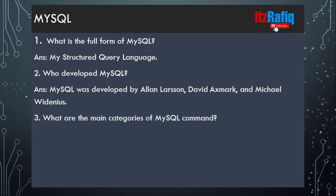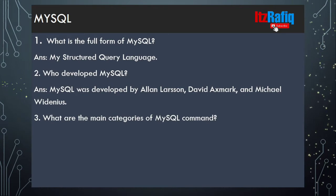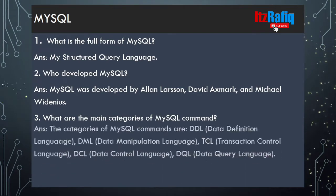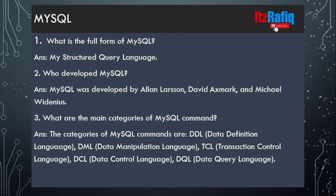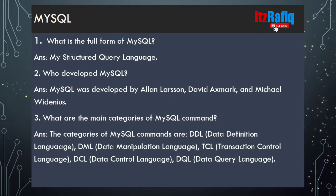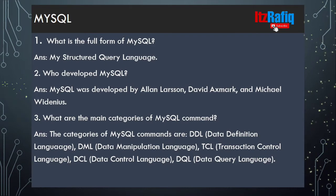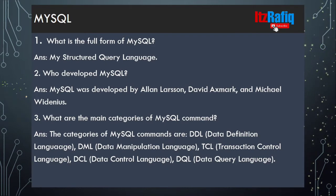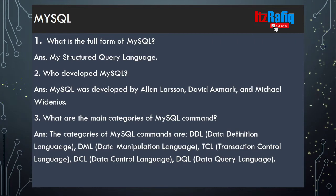Number three: what are the main categories of MySQL commands? There are five categories. They are DDL, DML, TCL, DCL, DQL. With full form you will learn the name of categories.